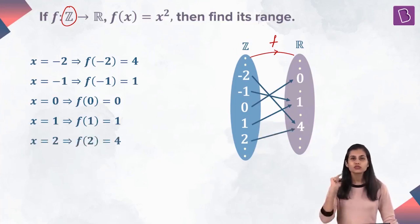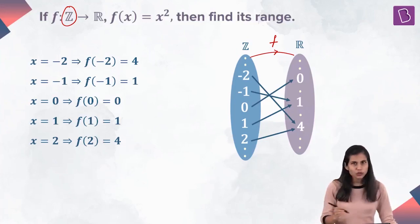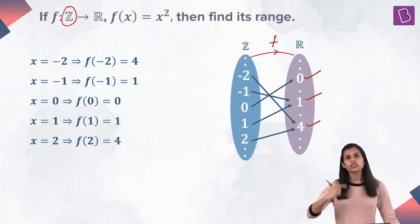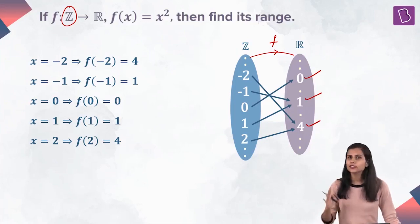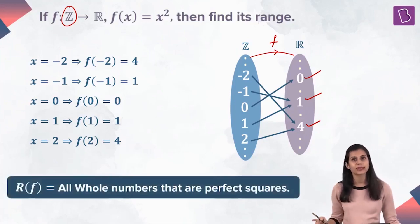It's very simple to generalize the mapping. 0 gets mapped to 0, so 0 is the image. −1 and 1 both get mapped to 1, so 1 is the image. 2 and −2 both get mapped to 4. Then 3 and −3 both get mapped to 9. Then 4 and −4 both get mapped to 16, and so on. The images are 0, 1, 4, 9, 16, 25, and so on — that means whole numbers which are perfect squares form the range.